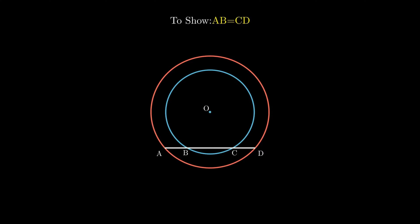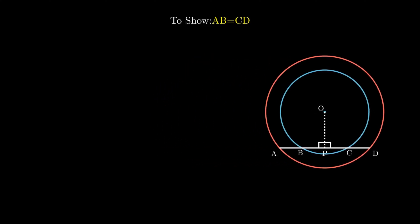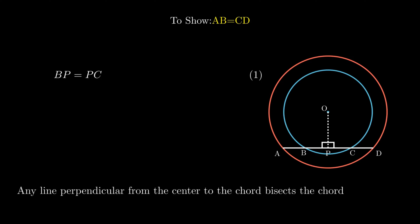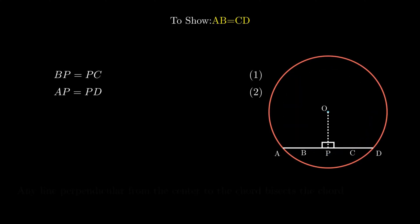To prove this, we need to construct a perpendicular line OP from the center point O to the segment intersecting the points on the concentric circles. As any line perpendicular from the center to the chord bisects the chord, therefore for segment BC, we conclude segment BP is equal to segment PC. Similarly for segment AD, we conclude segment AP is equal to segment PD.